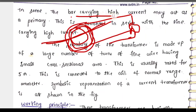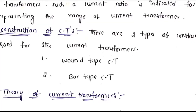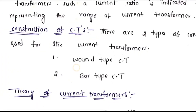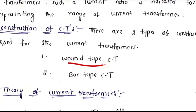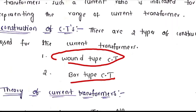Coming to the construction of CTs, there are two types: one is the wound-type current transformer and another is the bar-type current transformer. In the wound-type CT, thick wire is used and there are more secondary turns. In the bar-type CT, there is only a secondary winding, whereas the primary winding is the conductor itself — it acts as the conductor and carries the current.